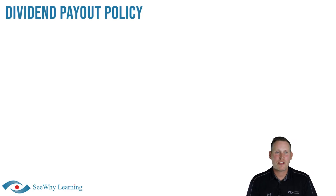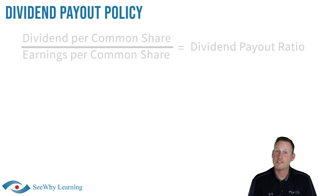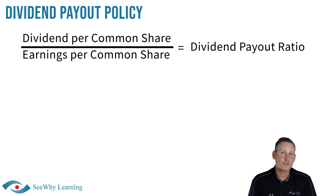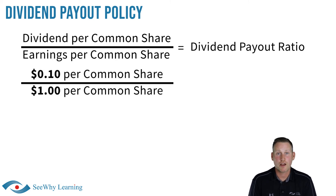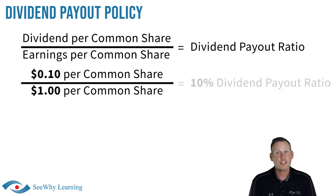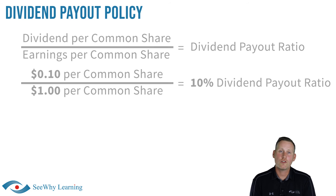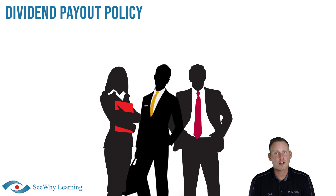A company's dividend payout ratio is calculated using the following formula: dividend per common share divided by earnings per common share. For example, if the company has earnings of $1 per common share and pays a dividend of $0.10 per common share, its payout ratio would be 10%.